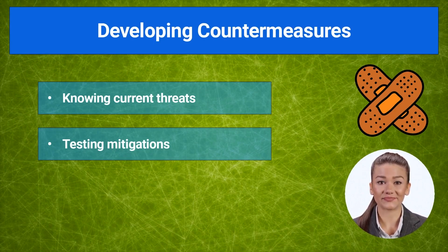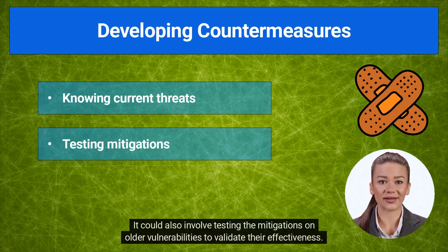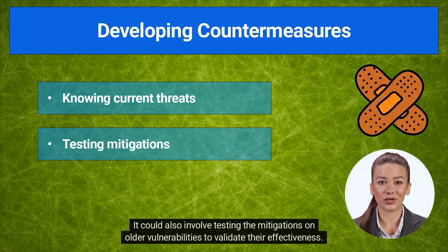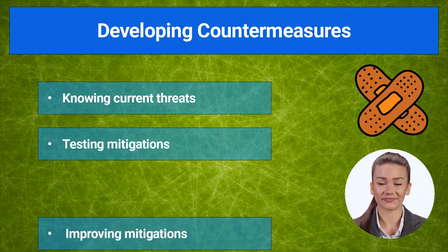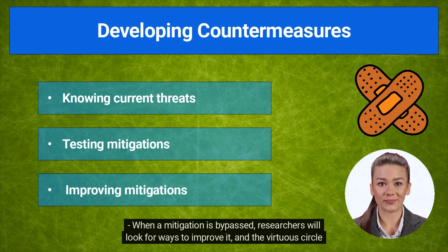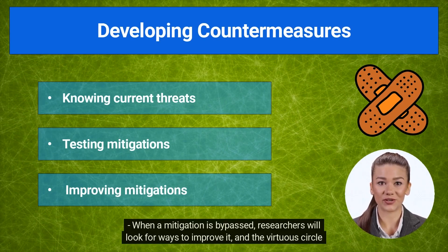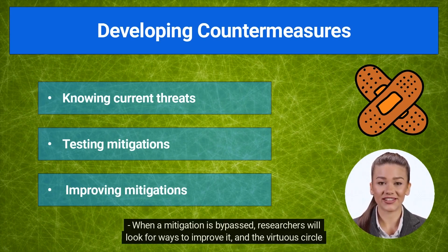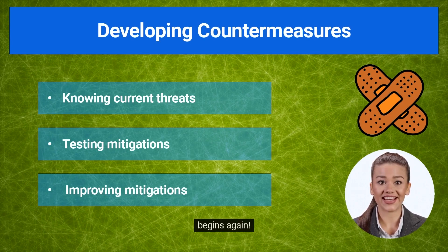It could also involve testing the mitigations on older vulnerabilities to validate their effectiveness. When a mitigation is bypassed, researchers will look for ways to improve it, and the virtuous circle begins again.